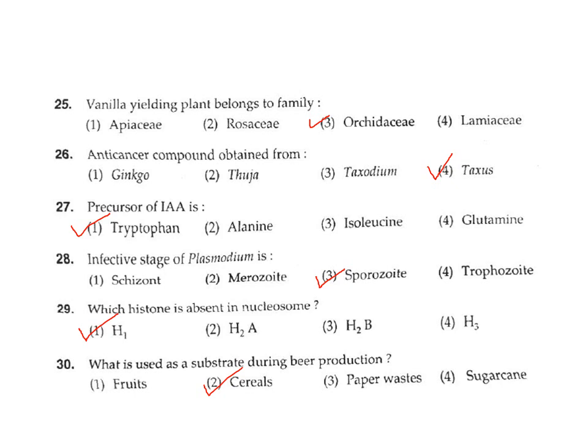Question 26: The anti-cancer compound taxol is obtained from what? Taxol is an anti-cancer compound obtained from Taxus. Correct answer Option 4. Question 27: What is the precursor of indoleacetic acid (IAA)? The precursor — the starting material from which it is formed — is tryptophan. Correct answer Option 1.